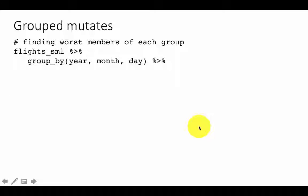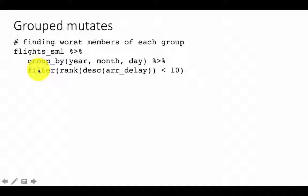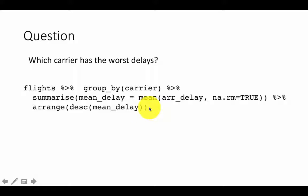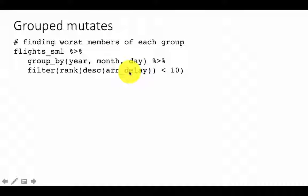There's a slightly better approach for finding the worst or best members of each group. Using `flights_small`, group by year, month, day, and then filter by `rank(desc(arr_delay)) < 10`. The descending rank means maximum values come first, and filtering by rank less than 10 gives only the top 10. You can use rank less than 2 or rank equal to 1 to get the single worst flight per day.